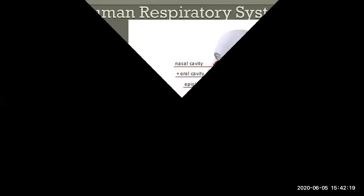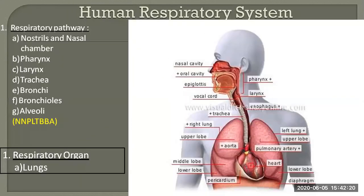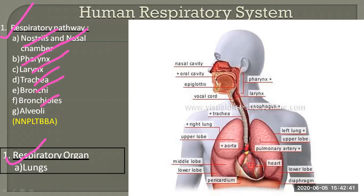What is the human respiratory system? First of all, the human respiratory system includes two things: first is the respiratory pathway, and another is the respiratory organ — the lungs. The respiratory pathway includes the nostril and nasal chamber, then pharynx, then larynx, then trachea, bronchi, bronchioles, and alveoli.